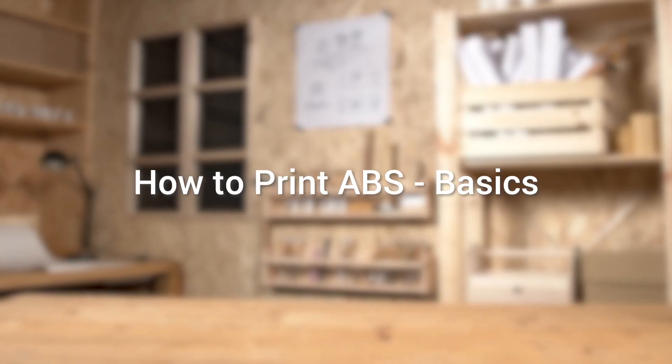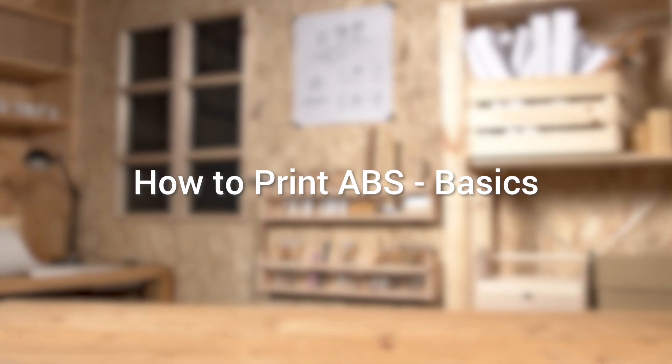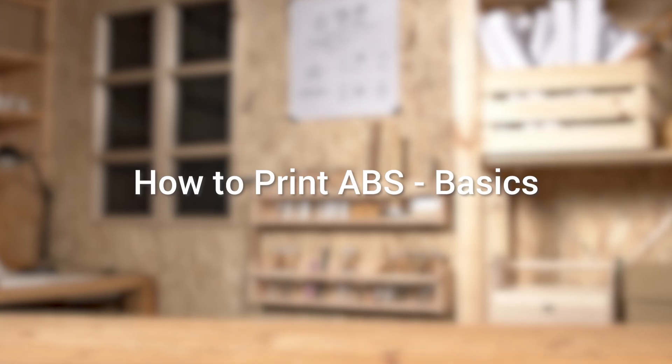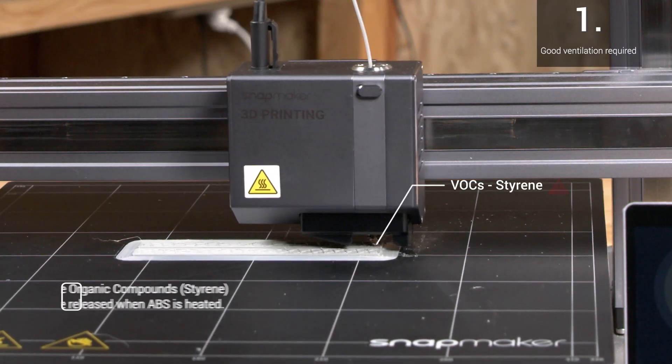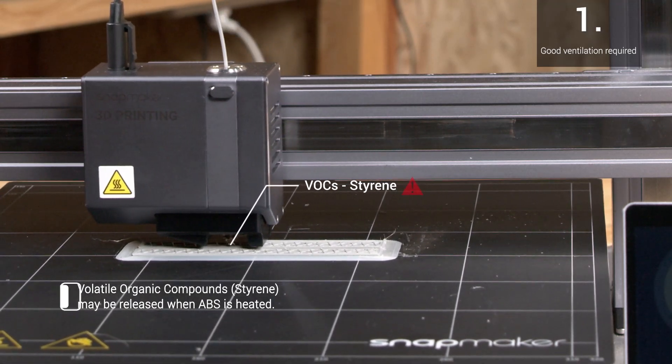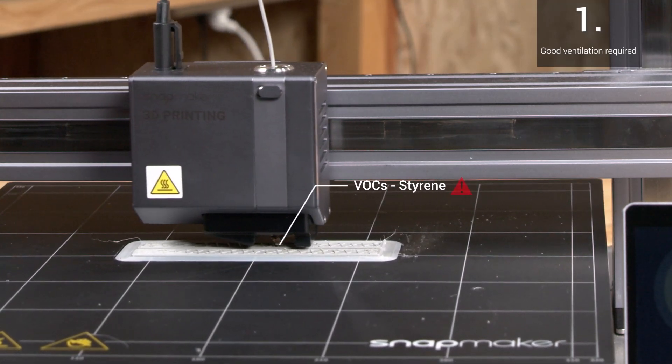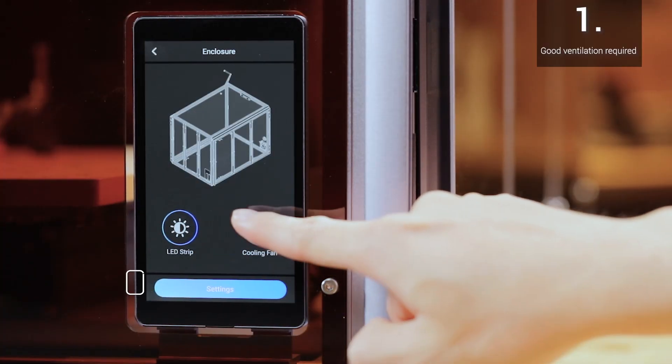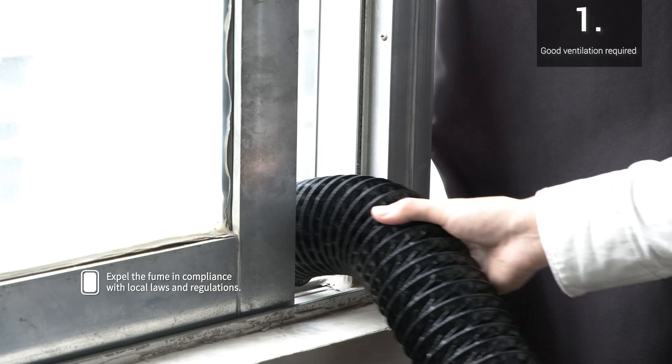Though ABS is better for practical uses, it's trickier to print with. You can follow these rules for a better printing experience. First, ABS produces a kind of VOCs called styrene when heated, which is smelly and harmful. So, keep good ventilation during printing. You can use a dedicated air purifier, or expel the fume outside with an enclosure equipped with an exhaust fan.